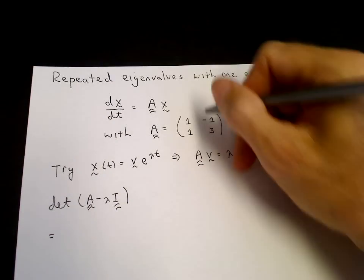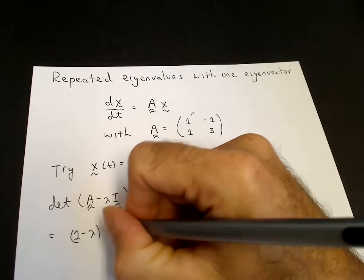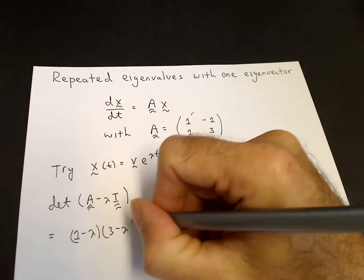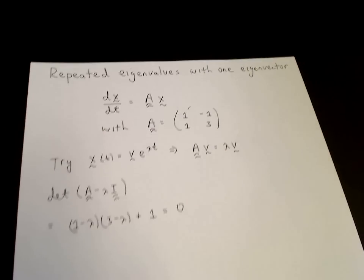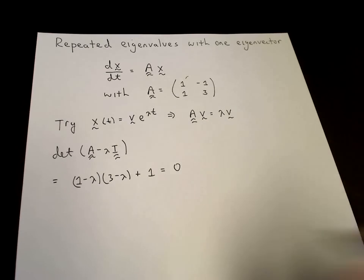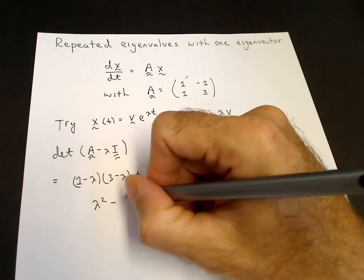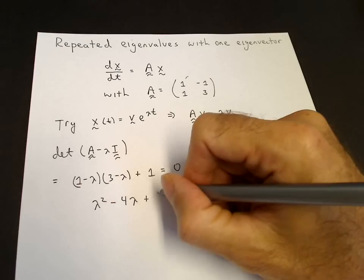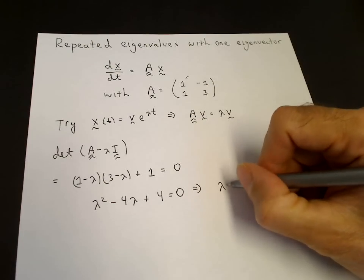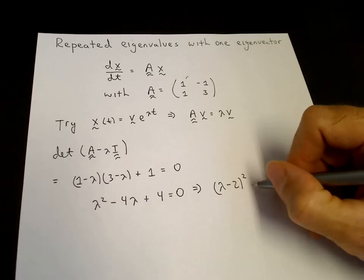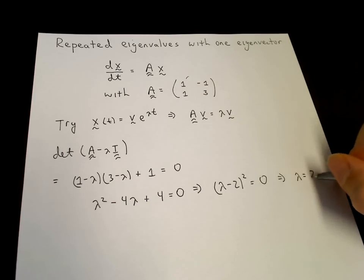Subtracting lambda from the diagonal gives (1 minus lambda)(3 minus lambda) minus (minus 1)(1) equals zero. Our characteristic equation simplifies to lambda squared minus 4 lambda plus 4 equals zero, which is factorable as (lambda minus 2) squared equals zero. So we have one repeated root: lambda equals 2.